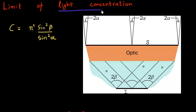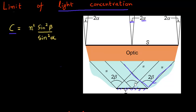We were discussing the topic of light concentration. In one of the previous videos, I derived this formula for the concentration that you can achieve in a system like this. I had related it essentially to the incidence angle of my incoming light, which I defined as alpha, and then the final angle at which this concentrated light hits the disc on which I want to concentrate my light. I had pointed out that it's proportional to the sine squared of this angle of incidence on my final disc.